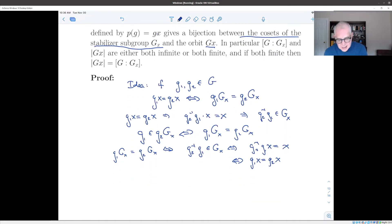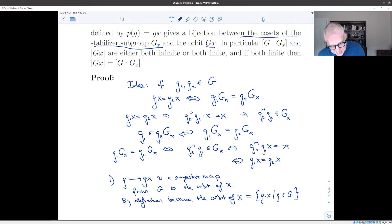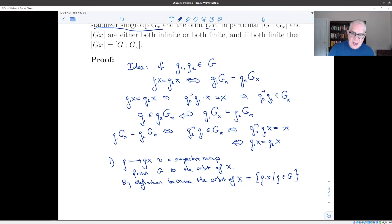So just to nail this down, first of all, the map G goes to G·x is a surjective map from G to the orbit of x. And that's more or less by definition, because the orbit of x is exactly equal to the set {G·x : G in G}. And that's what the image of this map G → G·x is.